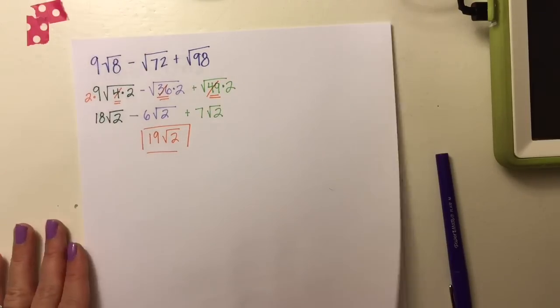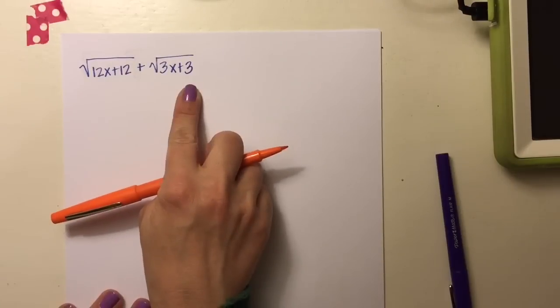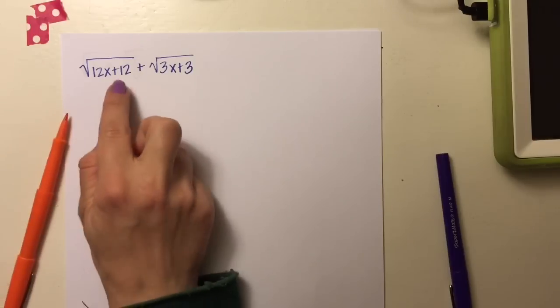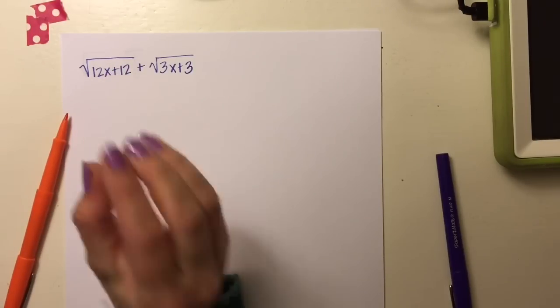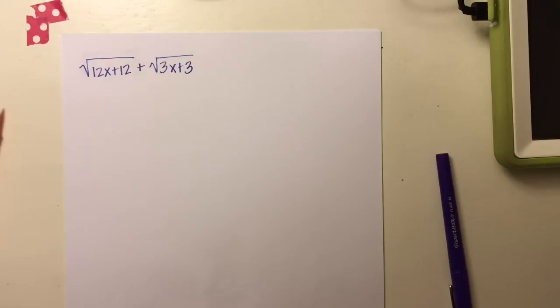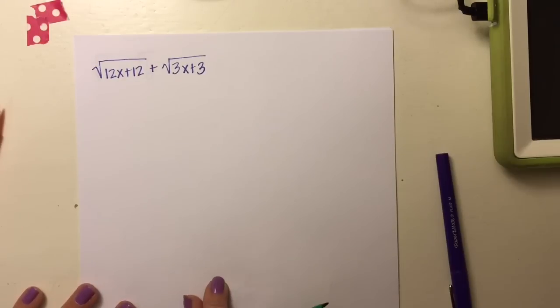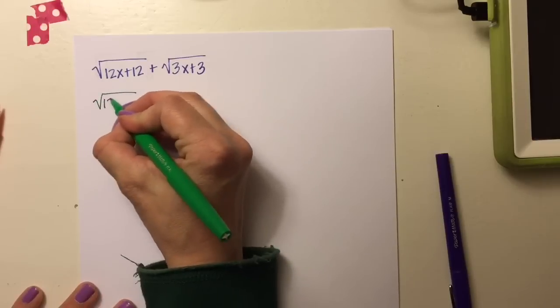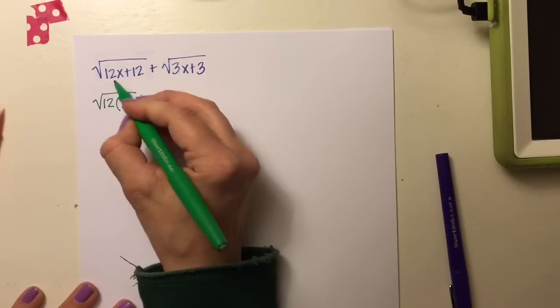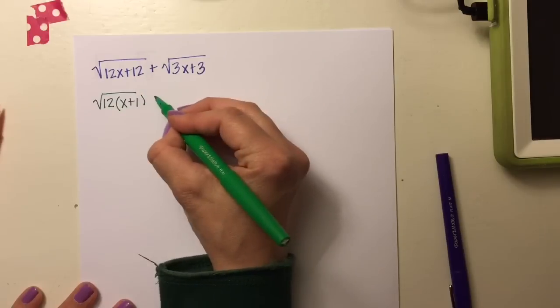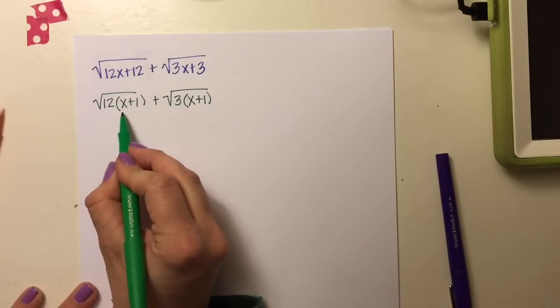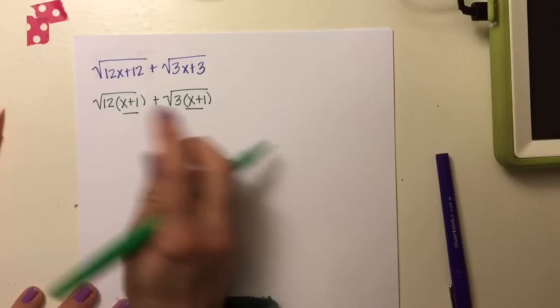Next: what if there's a polynomial inside the radical? You can't just separate it — you have to keep it together. All you can do is see if there's something to factor out. From 12x and 12, I can factor out 12, leaving x + 1. From the other term I can factor out 3, also leaving x + 1. So I'm on the right track since both have x + 1, but one has a 12 and the other has a 3.